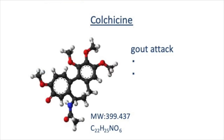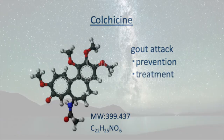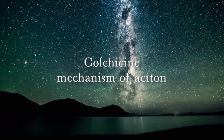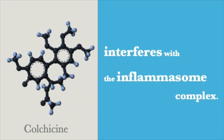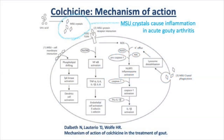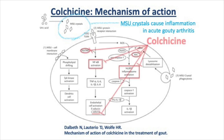Colchicine is used to prevent or treat gout attacks. MSU is reported to cause inflammation via toll-like receptors.